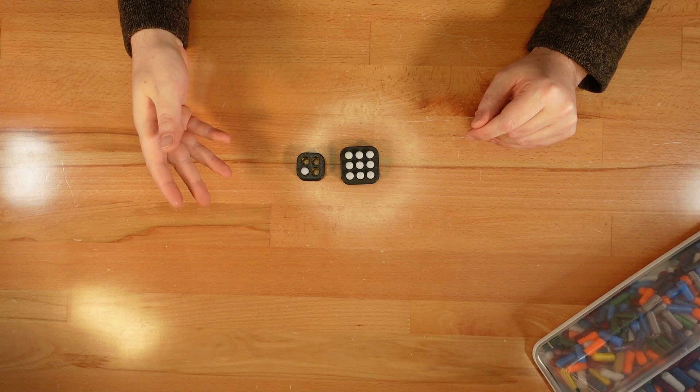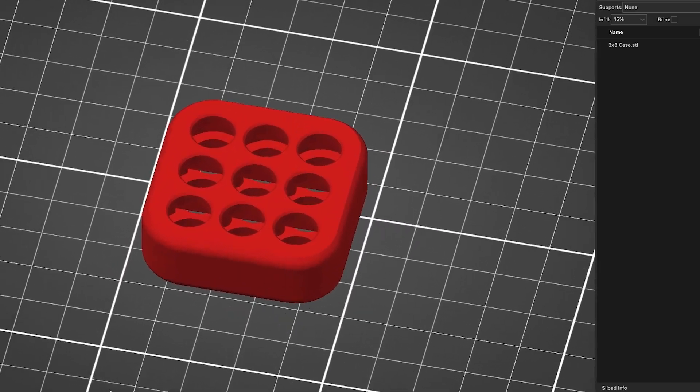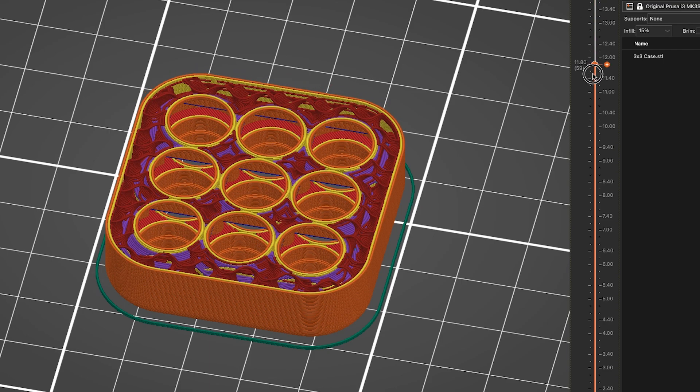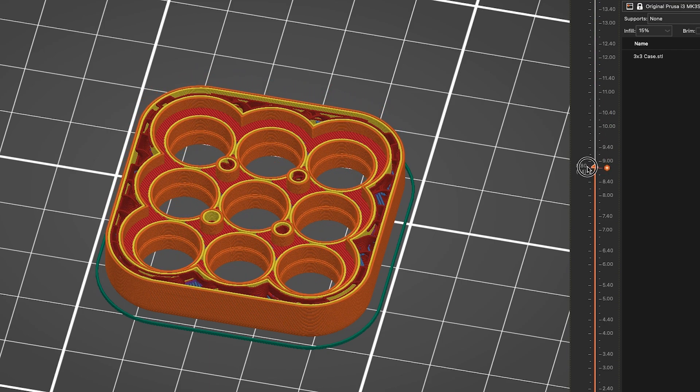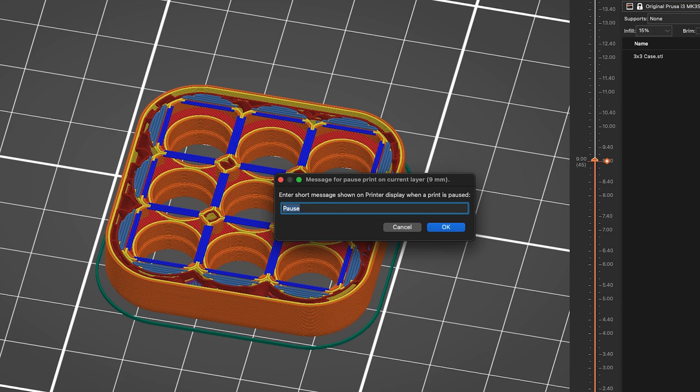How you add a pause to your print will depend on your slicing software. In PrusaSlicer you just drag the layer slider down until you reach this spot where the case starts to bridge. Now right click on the plus button and select add pause print, which is the G-code command 601. You can even type a custom message here that'll display on the printer's screen when it pauses.